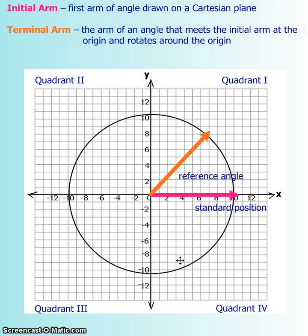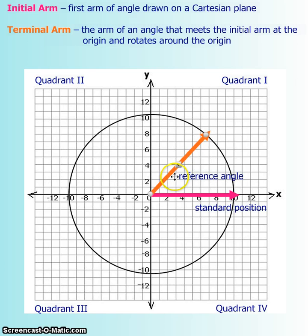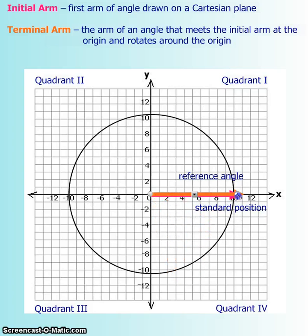When drawing an angle in the Cartesian plane, you start off with the initial arm first. The initial arm lies in standard position, which is along the x-axis in the first quadrant. To create your angle, you need a stopping point — that is your terminal arm. The terminal arm is attached to the initial arm at the origin, and then it spins around the origin to create your 360-degree circle.